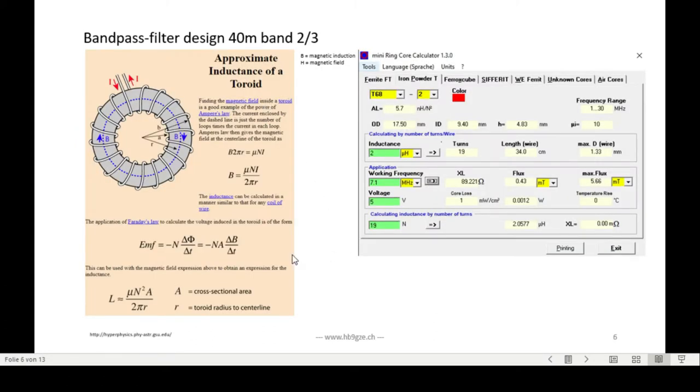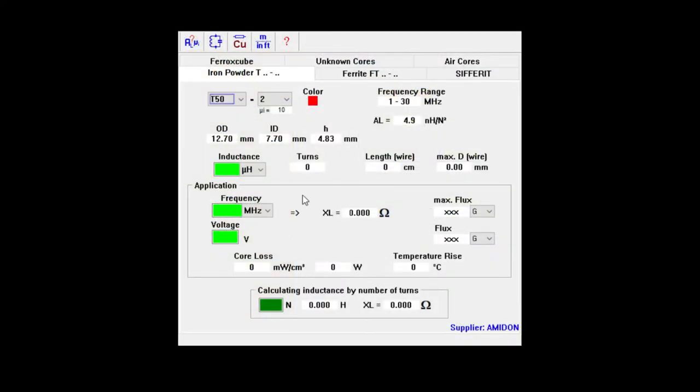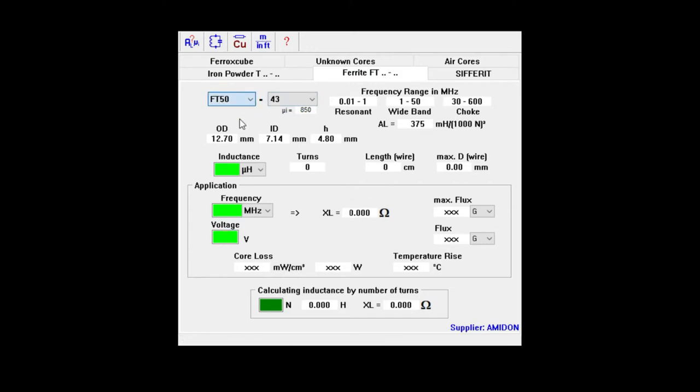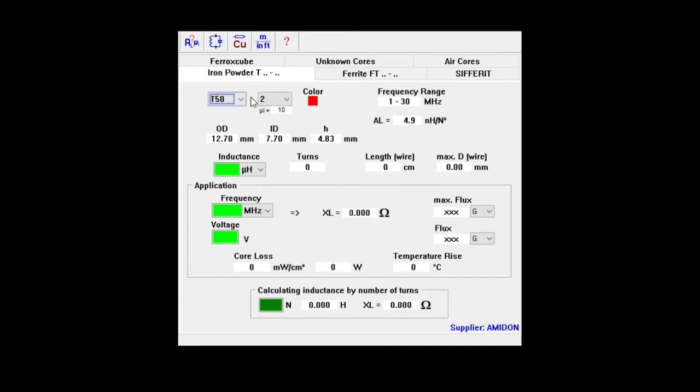Then we have to calculate the inductance and wind the toroids. Many people hesitate to get into that, but it's actually not so difficult. The inductance is dependent on the number of turns you have. The physical dimensions of the toroids get into the calculation as well. I'm using this mini ring core calculator, also an old program but a very nice one. You can choose all different kinds of core materials. You can have a ferrite core material, FT-3743. That's a typical material you see a lot in ham radio applications.